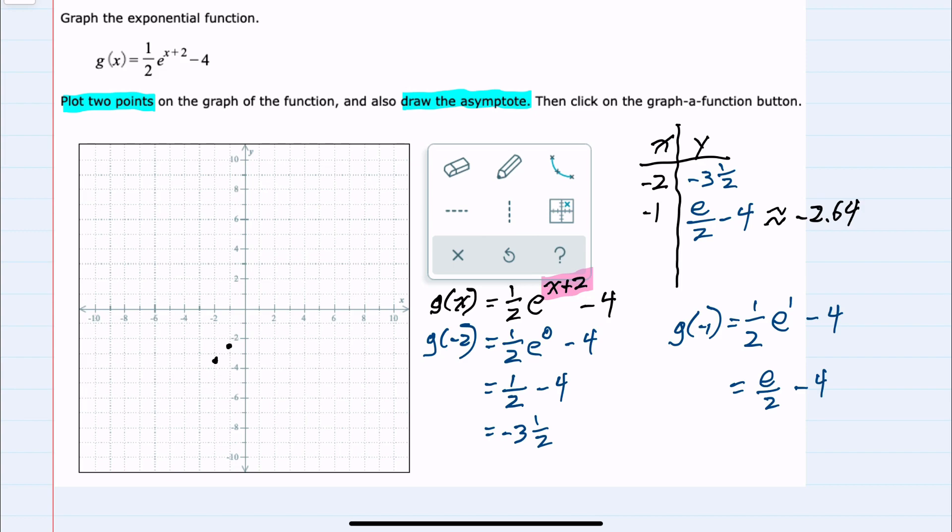For my asymptote, I can see that our g(x) function, which would normally have an asymptote of zero, has been shifted down four units, so our asymptote would be at negative four. I can see that it's getting close to that asymptote to the left and then increasing exponentially as x values get larger.